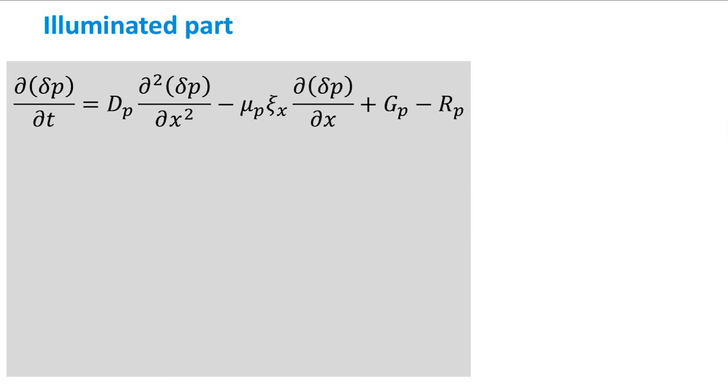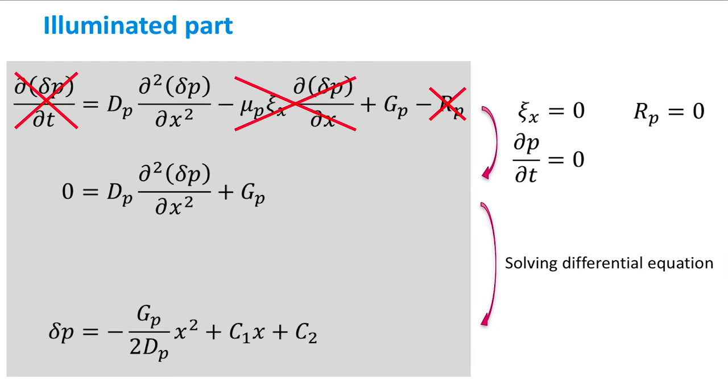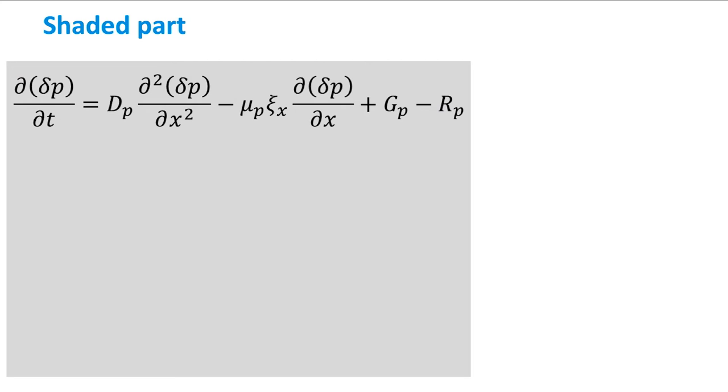We start with the illuminated part. Since there is no electric field, no recombination, and we consider a static or steady-state situation, we can remove several terms from the ambipolar transport equation, reducing this to the following differential equation. When we solve this differential equation, we obtain the following equation where c1 and c2 are integration constants.